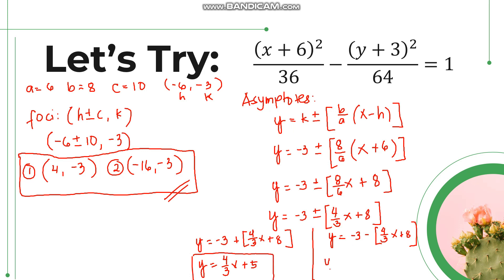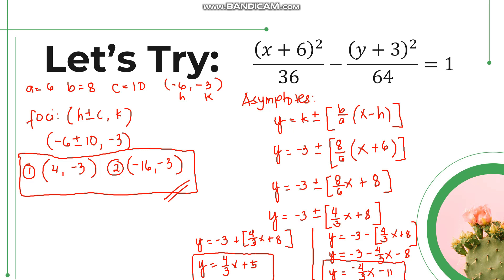For the second asymptote, distributing the negative sign: y equals negative 3 minus (4/3)x minus 8. Simplifying, y equals negative (4/3)x, and negative 3 minus 8 is negative 11. So the second asymptote is y equals negative (4/3)x minus 11.